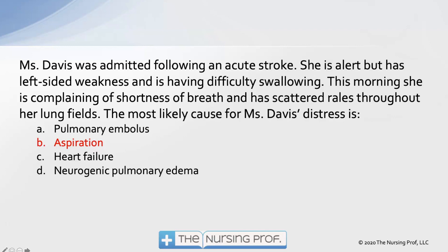First of all, this morning she's complaining of shortness of breath — this is a sudden onset of an acute problem. She has scattered rales throughout her lung fields. In most cases, if your patient is developing rales in their lungs, it's going to form from the bases up. So when we're talking about heart failure or even neurogenic pulmonary edema, we're talking about moving from the bases up.